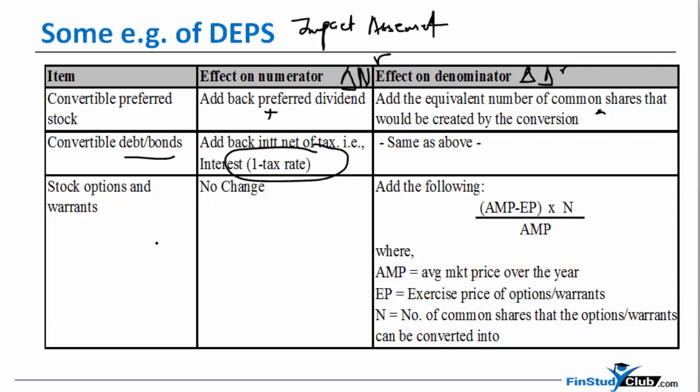For convertible debt or bond, you've got to take 1 minus T, as we have said. I'm going to come to stock and warrants in my next series. I'm going to come to that because that warrants a separate discussion altogether. So I hope that this full length example on diluted EPS was clear. Look forward to speak to you in my forthcoming session. Thank you.